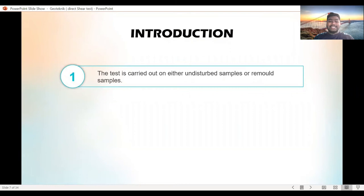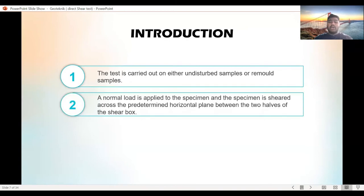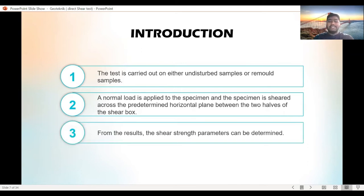This test is carried out on either undisturbed samples or remolded samples. A normal load is applied to the specimen and the specimen is sheared across the predetermined horizontal plate between the two halves of the shear box. From the result, the shear signs and parameters can be determined.